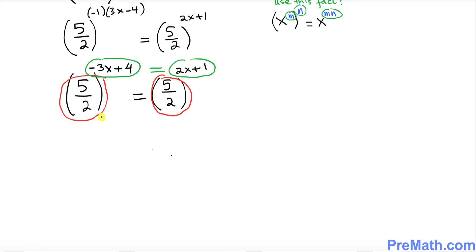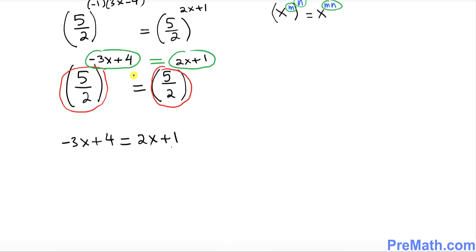That means you put an equal sign in between. So that means I can write negative 3x plus 4 equals to 2x plus 1.